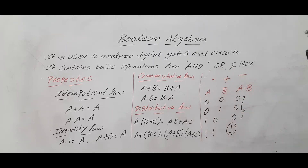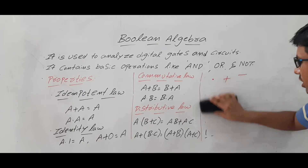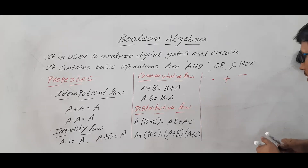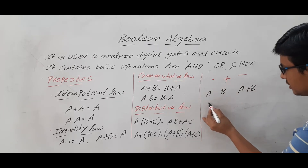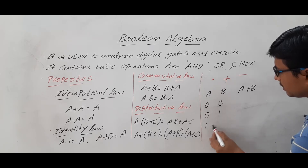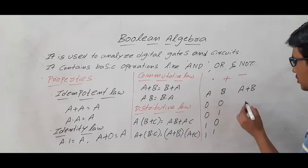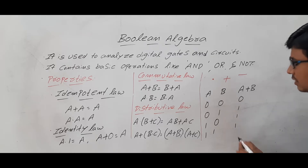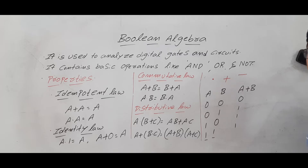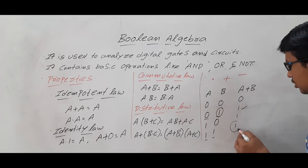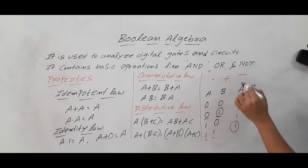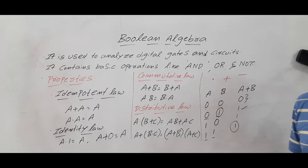Now let me discuss OR. I have A and B. A OR B: inputs are 0,0 / 0,1 / 1,0 / 1,1 — the output produces 0, 1, 1, 1. The meaning is that if any one of the inputs is 1, or if both inputs are 1, then it produces output 1; otherwise it produces output 0.